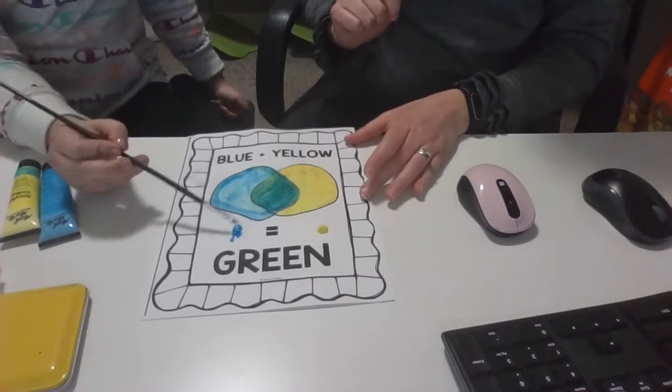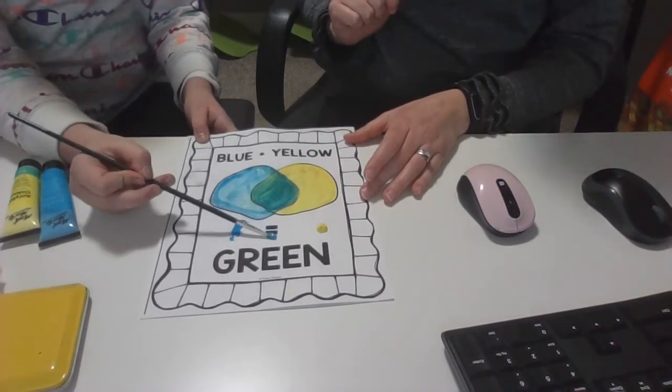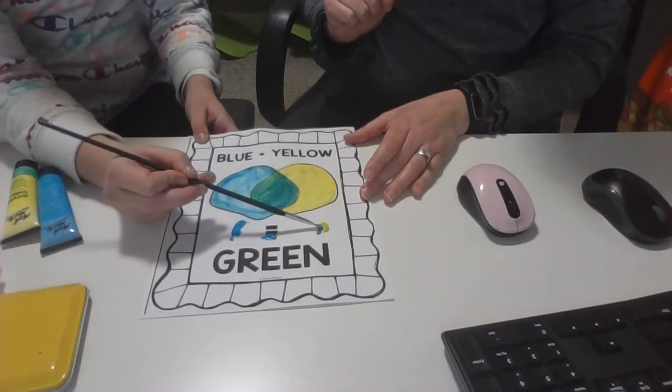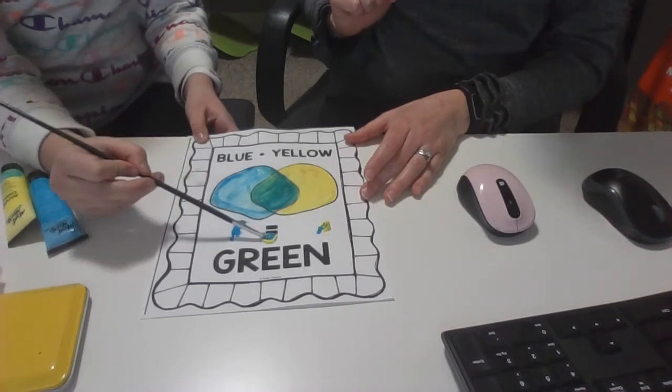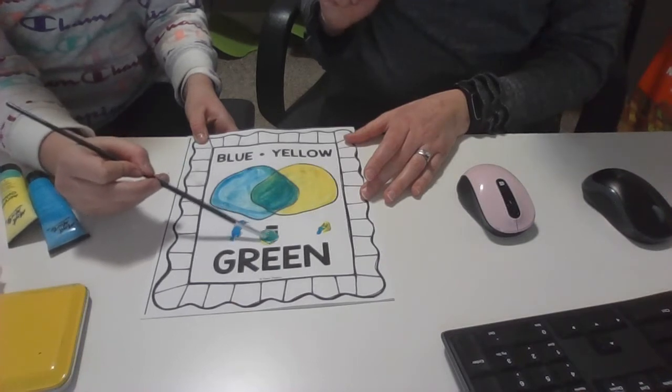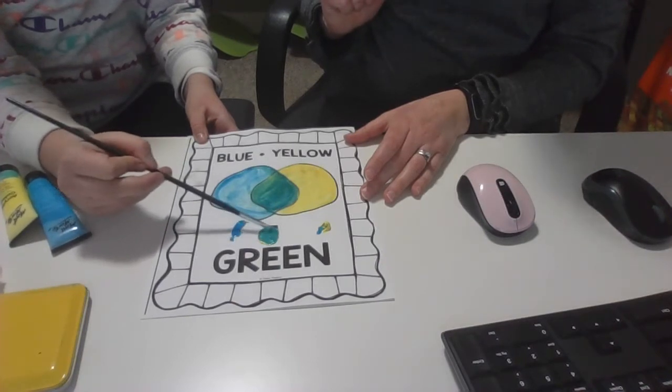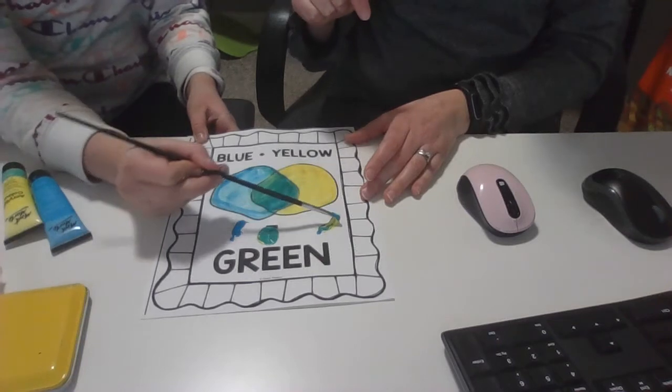you're actually going to be mixing the paints. So my artist here is going to show you - grab a little bit of each color and then mix them in the middle. And then the paint itself will turn green, and that's what you're going to paint the middle with.